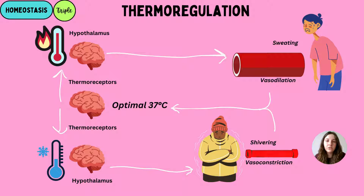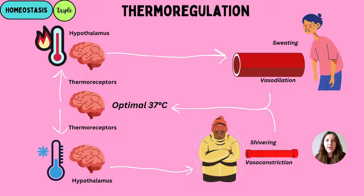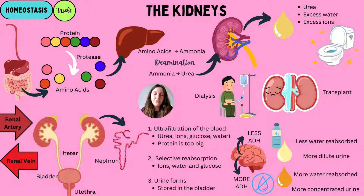If body temperature decreases below 37°C, thermoreceptors detect this and coordinate with the hypothalamus to cause the opposite response. We start to shiver — our skeletal muscles contract involuntarily, generating heat through respiration. We also have vasoconstriction, the narrowing of capillaries, which prevents thermal energy being released to the environment. Our vellus hairs stand on end via erector muscles, trapping air as an insulating layer. This entire process of returning to 37°C is called a negative feedback loop.